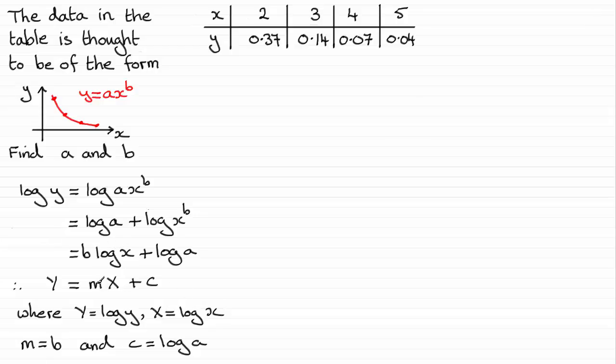And then we've got the two constants, m being equivalent to the b here, and the constant c being equivalent to the constant log a. So y equals mx plus c, so that means that if we were now to plot y against x, where y is the log y, and x is the log x, we should get a straight line.